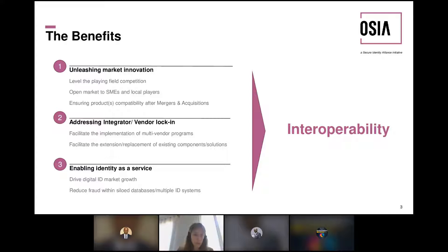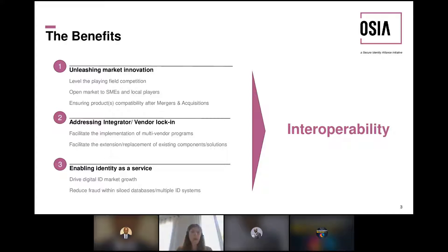In the past five years, there's been some consolidation around the identity system market. Every time there are mergers and acquisitions, it's quite a difficult time not only for the companies involved, but also for the governments that purchased solutions from those companies. Interoperability at market and industry level can also help here. The second major reason for interoperability is addressing integrator and vendor locking — a concern from governments that has existed for many years. Addressing this concretely means facilitating implementation of multi-vendor programs.